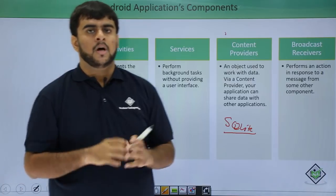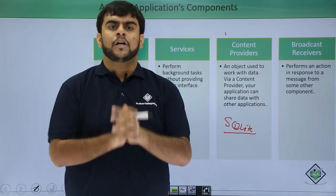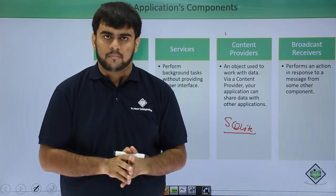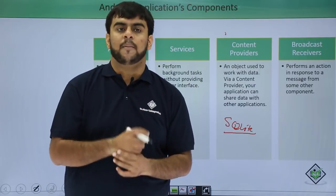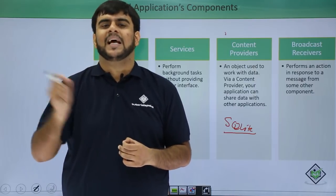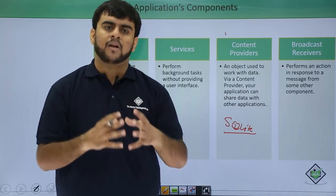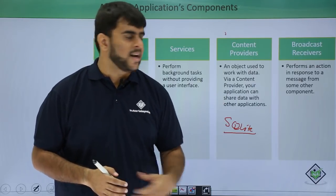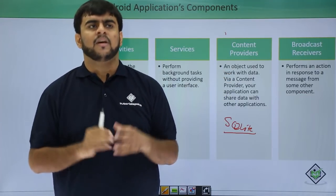After this we have the Broadcast Receiver, which is one of the most important components you would be using. Let me give you a basic example: whenever you are using WhatsApp and a verification SMS (the OTP) comes in, how does WhatsApp know that the OTP has arrived? It is because of the Broadcast Receiver. A Broadcast Receiver is that component which actually fires an Intent, signaling that a particular event has occurred, and based on that event we perform an action.